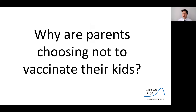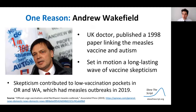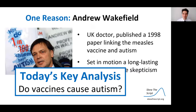So this raises the question: why are parents choosing not to vaccinate their kids against measles? One possible reason is research published by Andrew Wakefield, a British doctor who published a 1998 paper linking the measles vaccine and autism. His research set in motion a long-lasting wave of vaccine skepticism, contributing to low vaccination pockets in states like Oregon and Washington, which had substantial measles outbreaks in 2019. Today, we're going to use statistics to analyze whether vaccines in fact cause autism spectrum disorder.